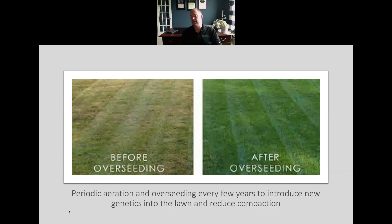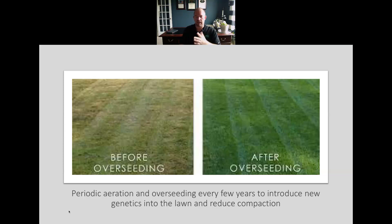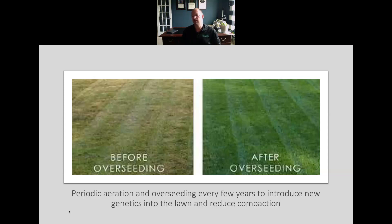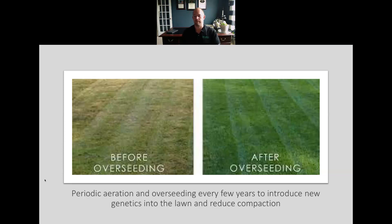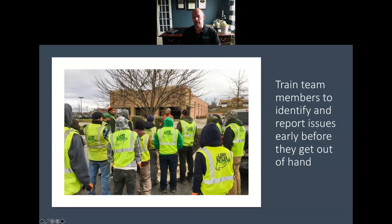On the turf side, periodic aeration and overseeding every few years is another IPM practice and can be an upsell for clients. Aeration removes thatch, opens up the soil, and reduces compaction — a physical change that helps improve the environment and ecosystem. Overseeding incorporates new genetics into an old lawn, rejuvenating it and giving it new life — and introduces a new biological component into the environment in the form of new grass seed.